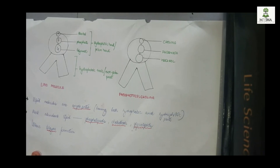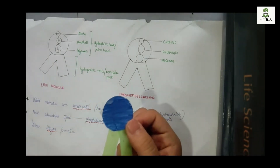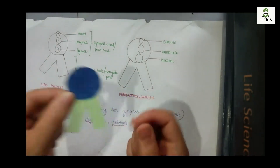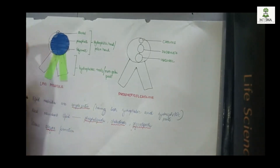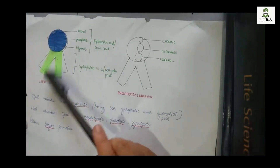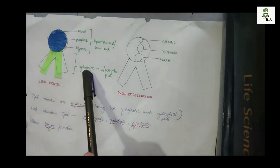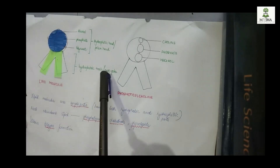Lipid molecules are amphipathic molecules. The lipids in the plasma membrane are phospholipids. Let's take this as a phospholipid molecule. To identify the parts: hydrophobic, or non-polar tails.